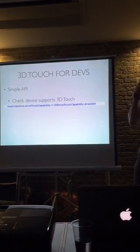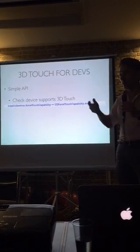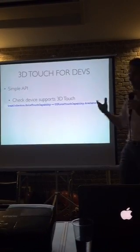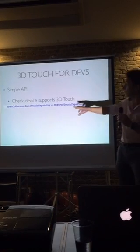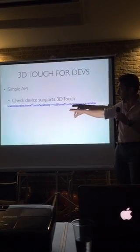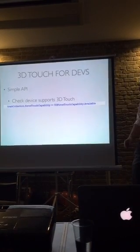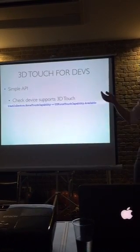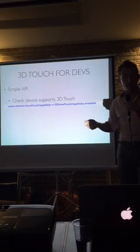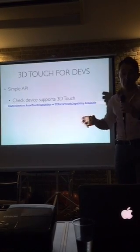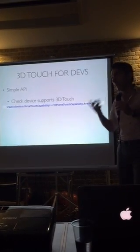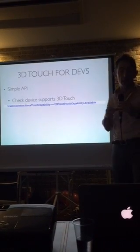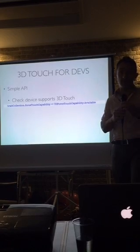The API for 3D Touch is really, really simple, and there's no '@available' check needed. You don't need to worry if your device has or hasn't got it with complex code. You just need to do a check on the trait collection if the force touch capability is available. And if it is available, you can go ahead and do stuff with peek controllers and force touch.